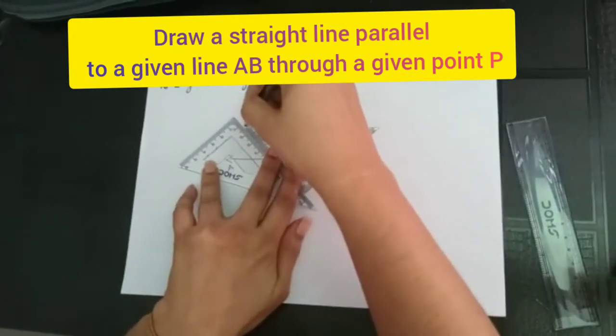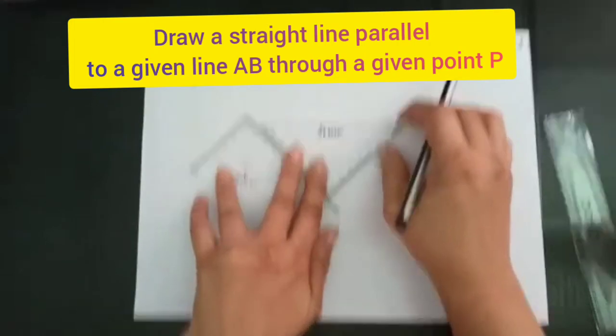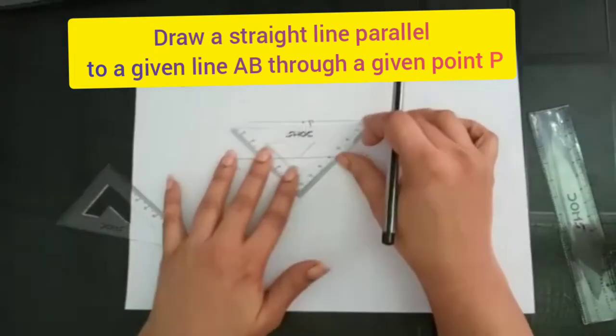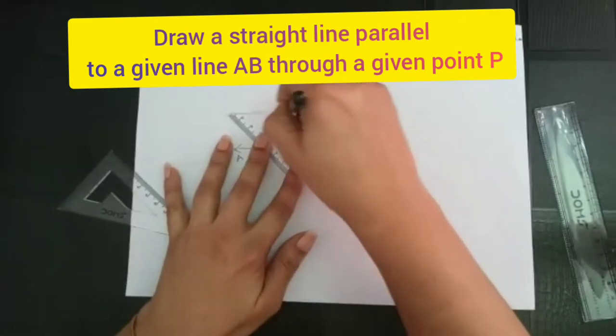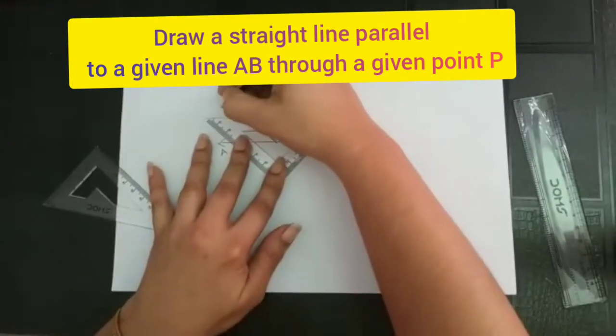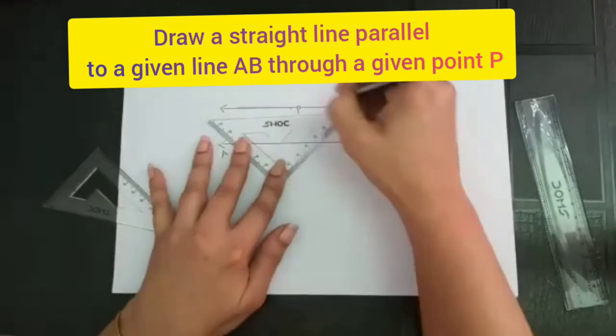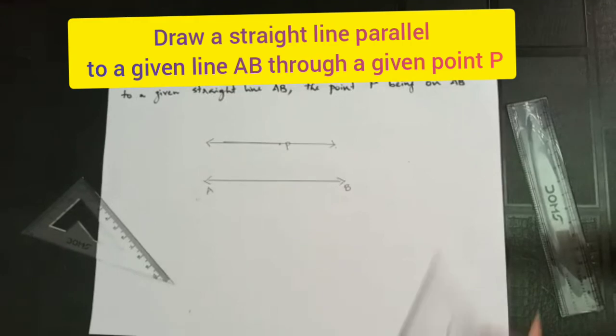Now draw the parallel line. There you go, you have drawn a parallel line through point P parallel to line AB.